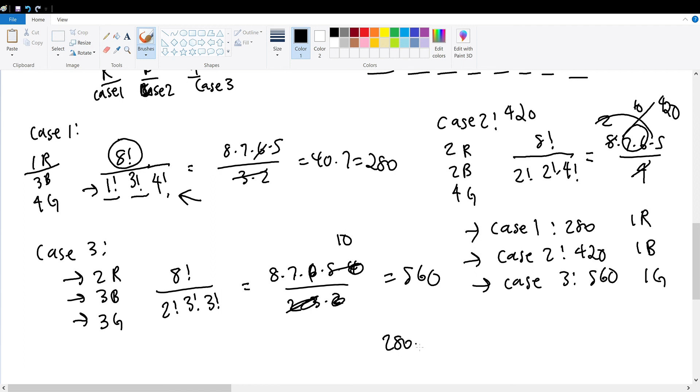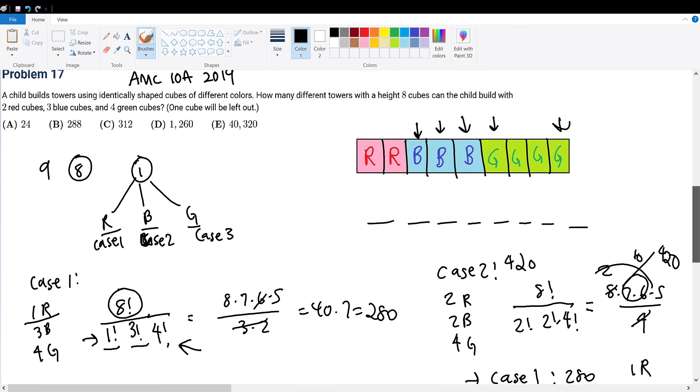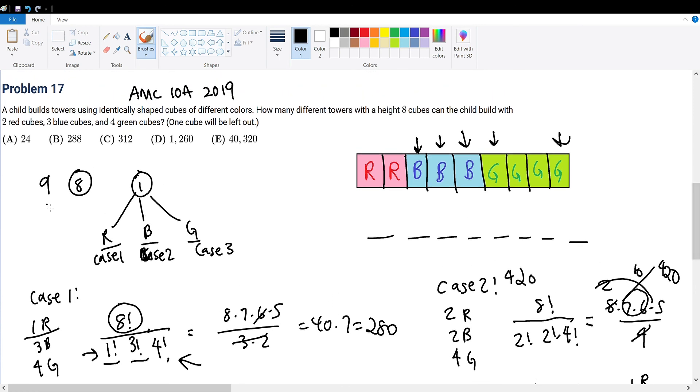So 280 + 420 + 560 will be our solution. This sums to 700 + 560 to get 1260. If we scroll up, we can find the solution that has 1260. I see that answer choice D has 1260, so answer choice D will be our solution.